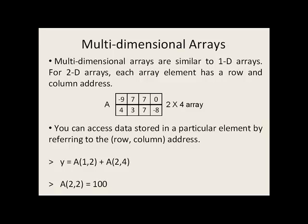So the value stored in the first row, second column of A, is 7. The value stored at the second row, fourth column of A, is negative 8.